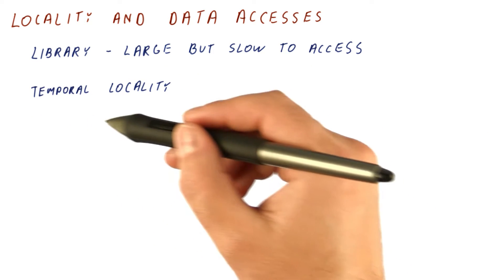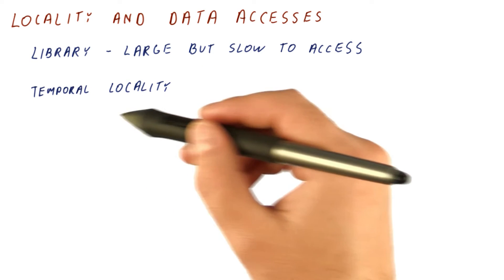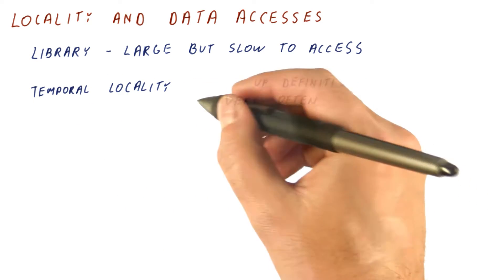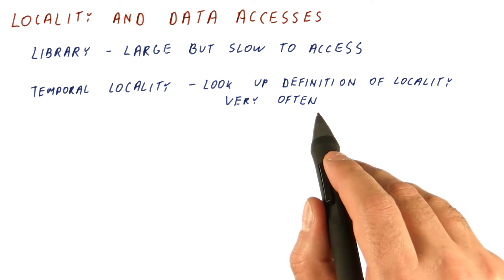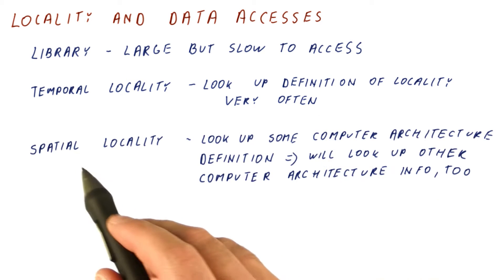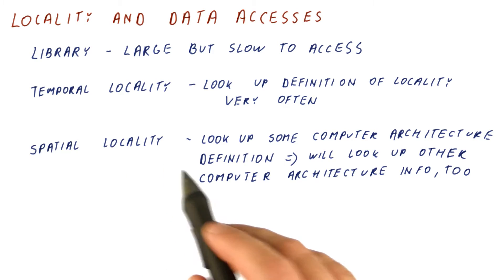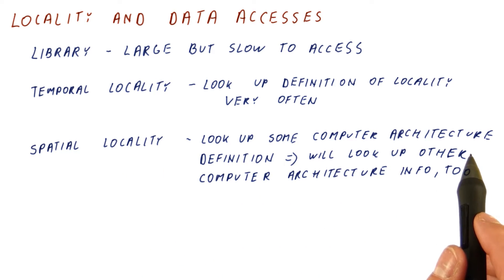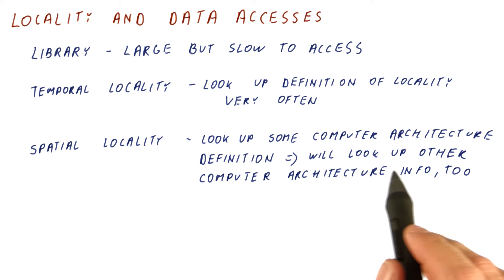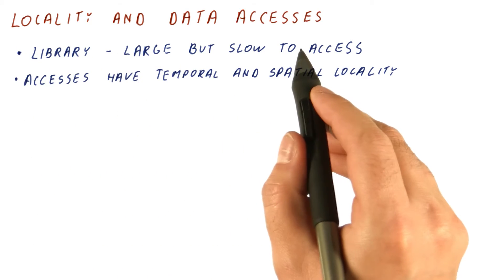When we're borrowing books from the library, typically there is a lot of temporal locality to it. For example, if we're a student, we might need to look up the definition of locality very often while we're studying. And usually also, there is a lot of spatial locality to using books. For example, if we look up some computer architecture definition once, we're likely to be looking up other computer architecture topics too in the near future.